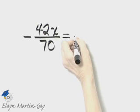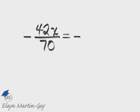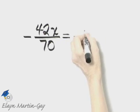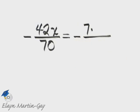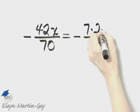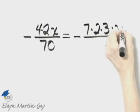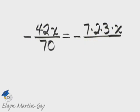So I'll rewrite the negative. I know 42 is seven times six, and seven is a prime, so that's seven times six is two times three as a product of primes, and of course I have the x there.